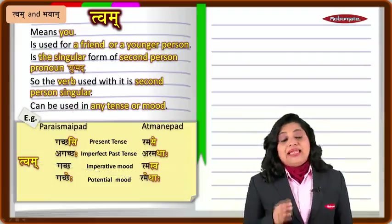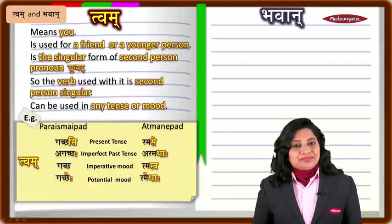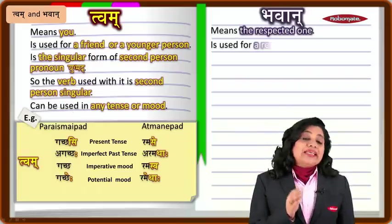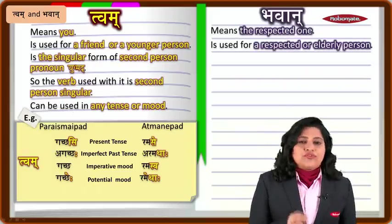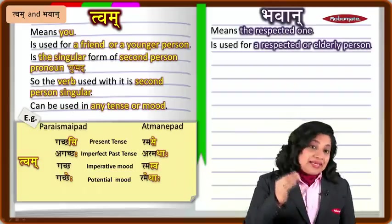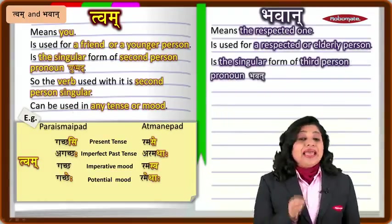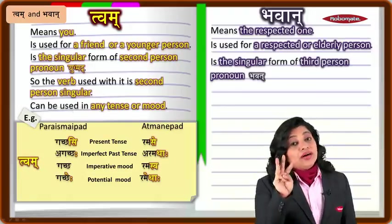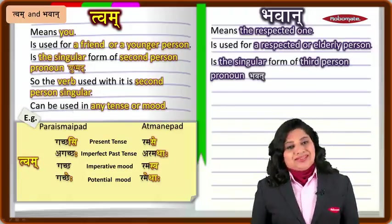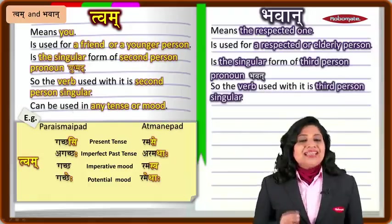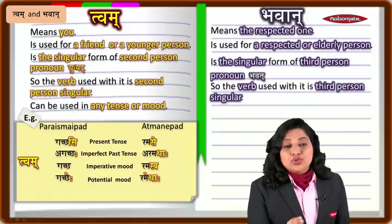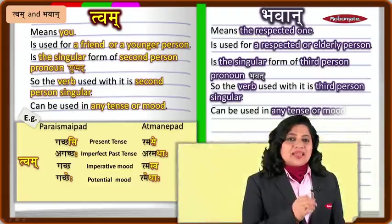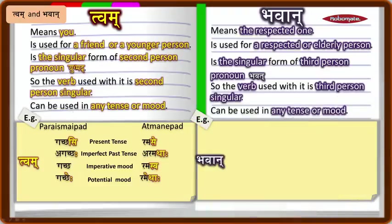Now let us understand bhavan. The word bhavan means 'the respected one.' It is used for a respected or elderly person. It is the singular form of the third person pronoun 'bhavat,' and the verb used with it must be in the third person singular. This can be used in any tense or mood.